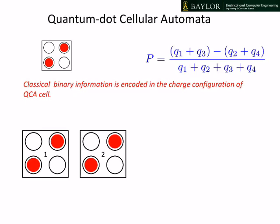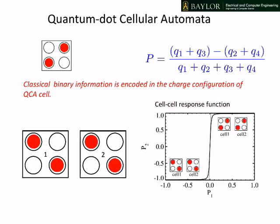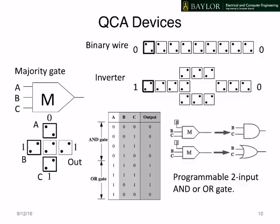If we put neighboring cells together, they tend to align. We set the state of cell 1, and cell 2 reacts by aligning one way or the other. This cell-cell response function captures that behavior — we set the polarization of cell 1 and calculate the response of cell 2. Notice that a very weak P1 corresponds to a very strong P2, and this is signal gain. We can make basic QCA devices: in the upper right, a binary wire where the input on the left corresponds to the output on the right.